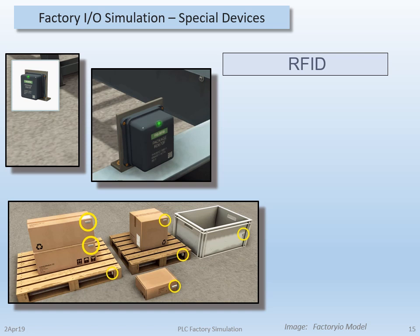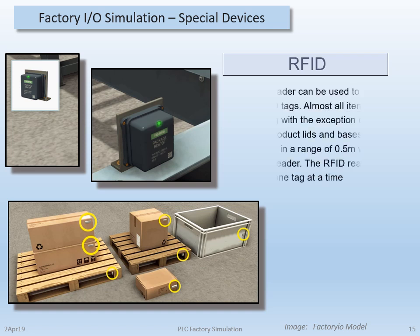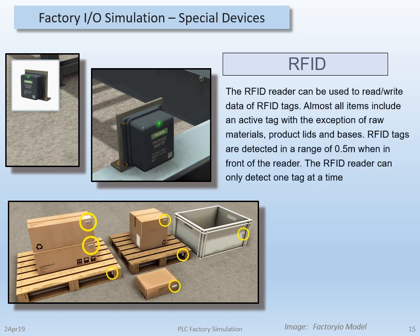Let's take a look at one of the recent additions to the simulation. There is an actual RFID sensor in the form of a read-write head and RFID tags placed on boxes, pallets, and containers. The RFID head can be used to read or write data to any of these RFID tags. Most items include an active tag, with the exception of raw materials, products, lids, and bases, which can be read by the camera. RFID tags are detected in a range of 0.5 meters when in front of the head, and only one tag can be detected at a time. If there's more than one tag in the field, either or both tags will be ignored, which is very much like real-world RFID reading.